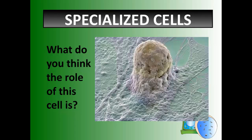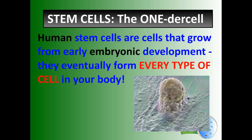Now what do you think the role of this cell is? This cell is called a stem cell, and stem cells are the cells that grow from early embryonic development. Essentially, all your cells in your body — every type of cell, the muscle cell, the skin cell, the nerve cell, the blood cell, whatever cell you can think of — they all start from this cell. That's pretty amazing. They all start from stem cells, that's why they call them stem cells.